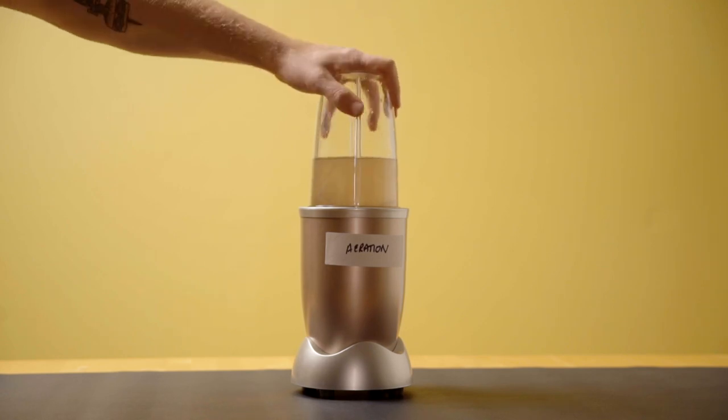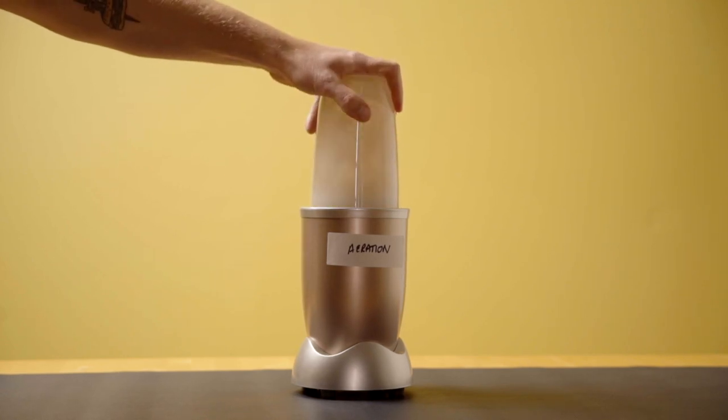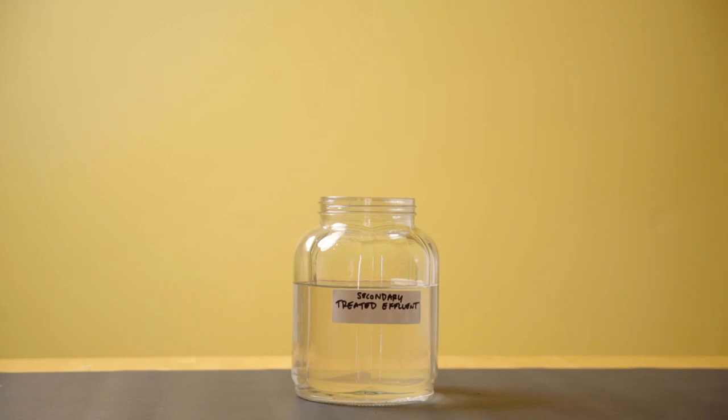In aeration tanks, bacteria break down any leftover organic material. In a second sedimentation tank, more sludge settles.